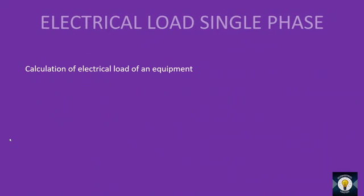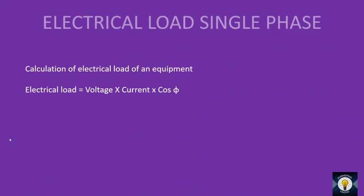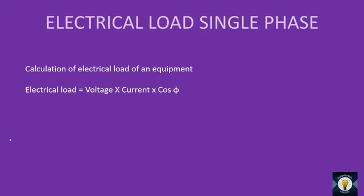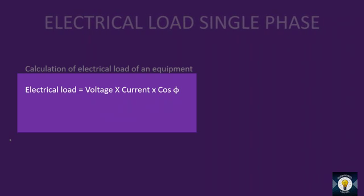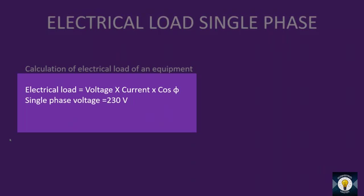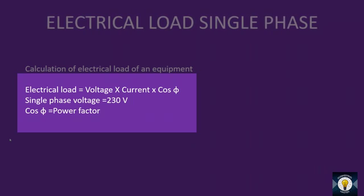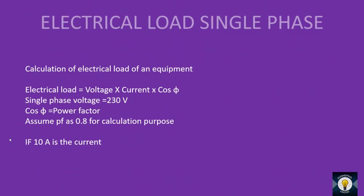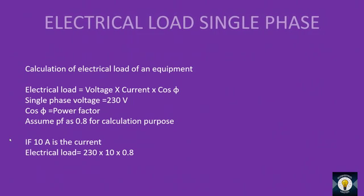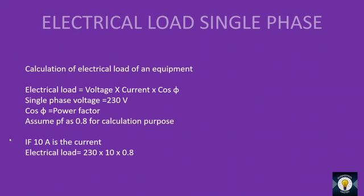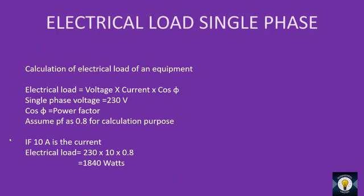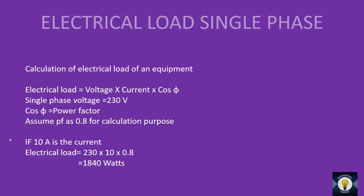If you want to calculate the electrical load of equipment, first identify whether it is single phase or three phase. If it is single phase, the electrical load equation equals voltage into current into cosφ. Single phase voltage is 230 volts. Current can be obtained from the nameplate. Cosφ is the power factor; for calculation purposes we assume 0.8. If 10A is our current, then electrical load equals 230 × 10 × 0.8 = 1840 watts, or 1.84 kilowatts.